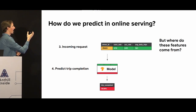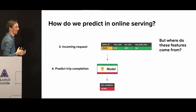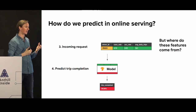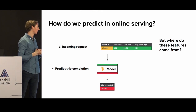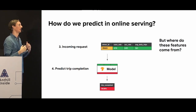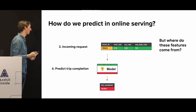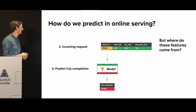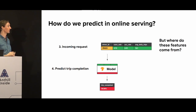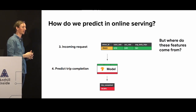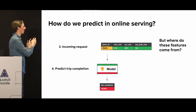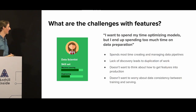As an ML platform team or a data engineering team, we will have to provide those features. We will have to enrich that driver ID with the green feature values. And we have to do it in a way that's consistent with what was given to the model during training, while ensuring there's no staleness in that data or inconsistency in the way it's transformed or created or sourced - even if it's just the distributions that are skewed.